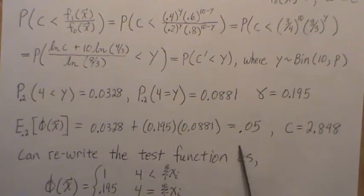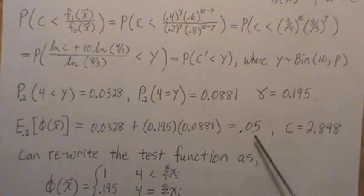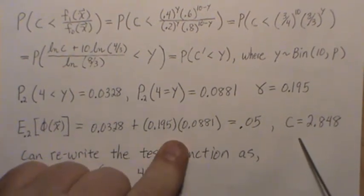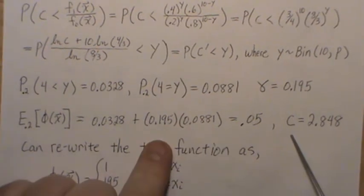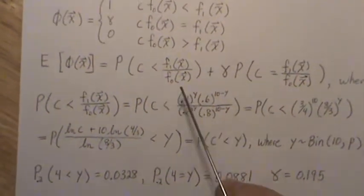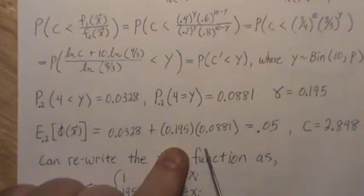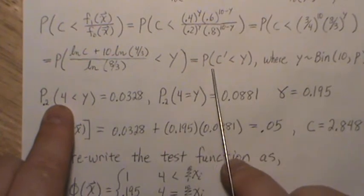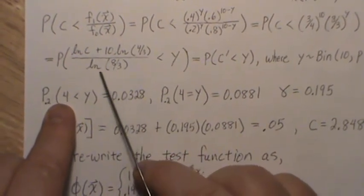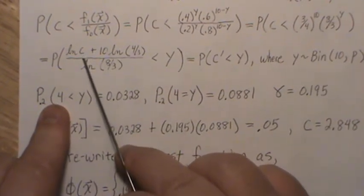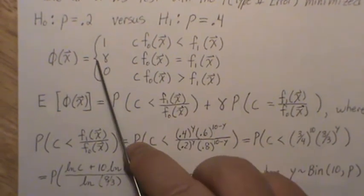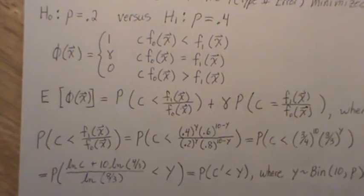So now we've created an alpha 0.05 test. Now once we know this, we can back solve for C here. So we know that C prime has to be 4. And so if this is 4, then we can back solve for C, which is this, and we can put it in there. So now we have all the components for this test.